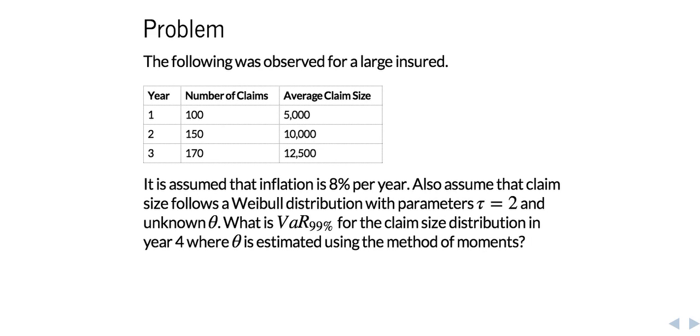And assuming that there's some amount of inflation, and assuming that we want to model our claim size with Weibull distribution with parameters τ equals 2 and some unknown θ, we want to be able to calculate a value at risk at the 99th percentile for the claim size distribution in year 4, where θ is going to be estimated using the method of moments.